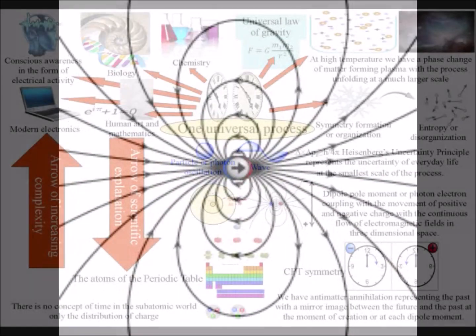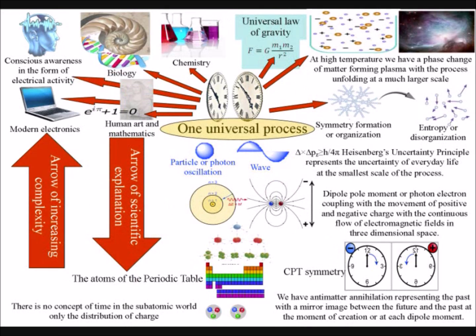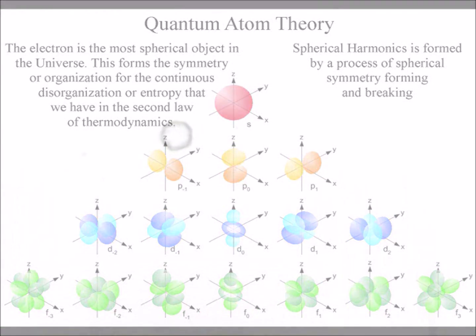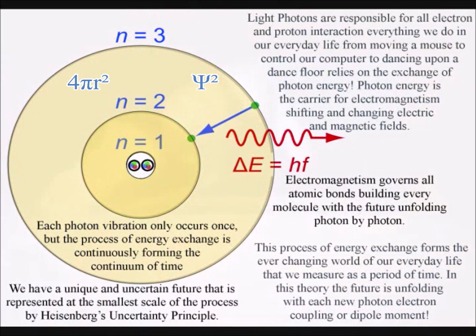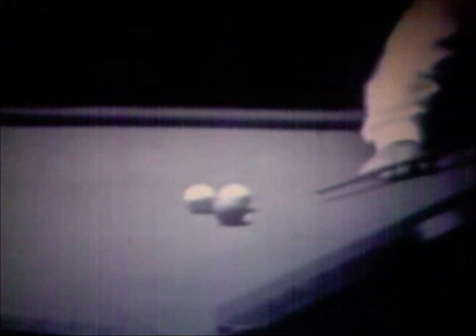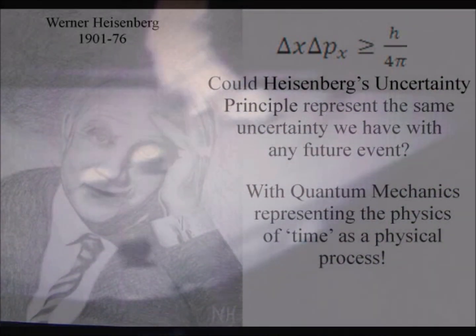This can be seen if we increase the frequency or temperature: the vibrations increase, breaking the bonds that hold the atoms together, and we have fire or plasma. We have a universal interactive process formed by the spontaneous absorption and emission of light, with an interaction between photons and the electron probability cloud of the atoms. This spontaneous process forms the ever-changing world of our everyday life that we see and feel as the passage or continuum of time. Each photon oscillation or vibration only occurs once, but the process of energy exchange as a whole forms the probability and uncertainty of life.